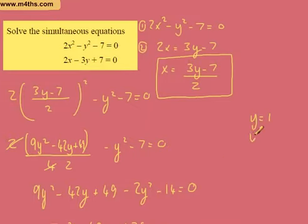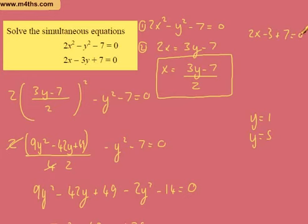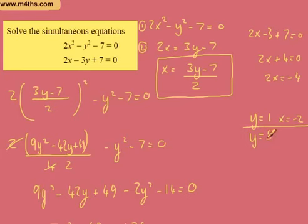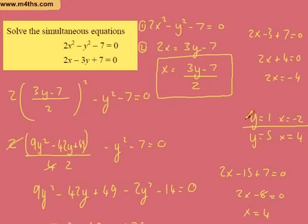So if y equals 1 and y equals 5, substitute them into the linear. Taking y to be 1: 2x minus 3y plus 7 equals 0, so 2x minus 3 plus 7 equals 0, giving 2x plus 4 equals 0, so x equals negative 2. If y equals 5: 2x minus 15 plus 7 equals 0, so 2x minus 8 equals 0, and x equals positive 4. So the coordinates are (4, 5) and (negative 2, 1).